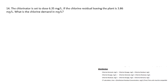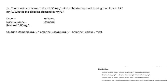Question fourteen: the chlorinator is set to dose 6.35 mg/L. If the chlorine residual leaving the plant is 3.86 mg/L, what is the chlorine demand? You know the dose is 6.35 mg/L and the residual leaving the plant is 3.86 mg/L; you need to find the demand. Using the demand formula — chlorine dosage minus chlorine residual — 6.35 minus 3.86 shows a demand of 2.49 mg/L.